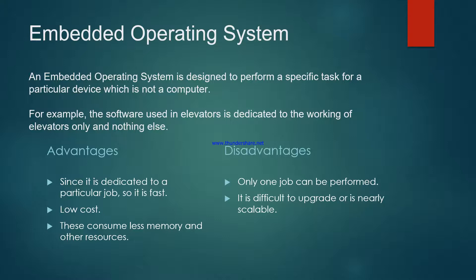The next type is the embedded operating system. An embedded operating system is designed to perform a specific task for a particular device which is not a computer. For example, the software used in an elevator is dedicated to the working of the elevator only and nothing else. The embedded operating system allows access of device hardware to the software running on top of the operating system.